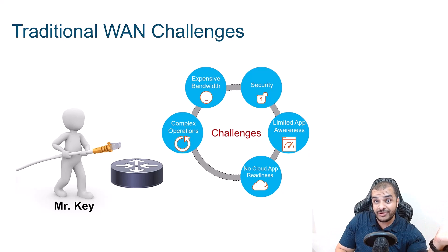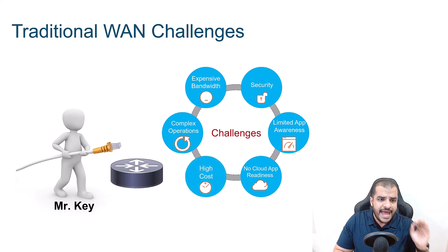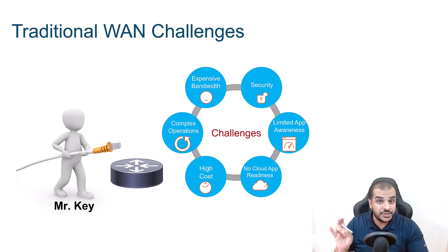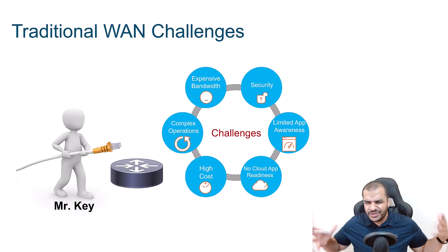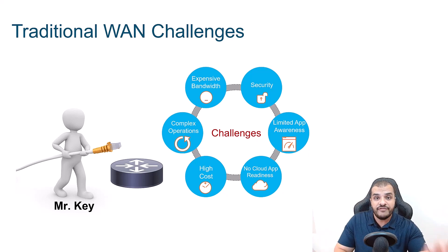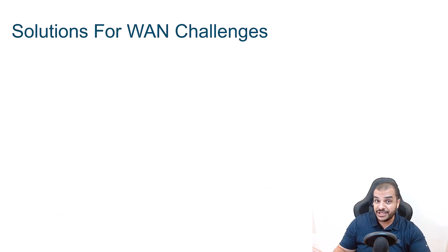All of those challenges are solvable — I can give you routers that can do anything, but then how much are you going to pay? Everything has a price. So eventually, you need to solve this in the fastest, most secure, easiest way with less budget. This is going to work only if we move to SD-WAN. Until we migrate to SD-WAN, Mr. Key is not very happy because his job is very complicated. SD-WAN is the solution.